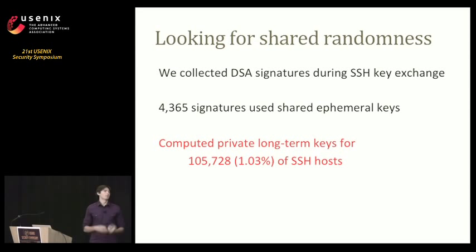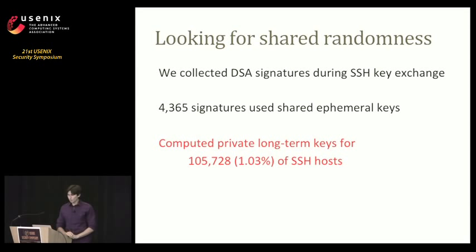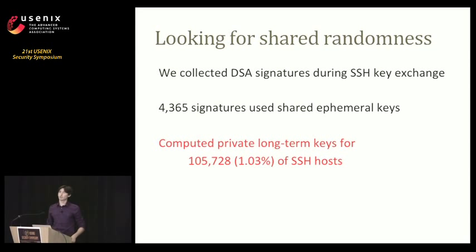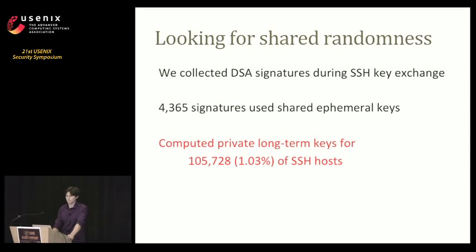When performing our SSH scan, we collected signatures along with the SSH keys and looked for signatures sharing randomness. We found approximately 4,000 signatures sharing these ephemeral keys. This wasn't a single machine using the same randomness twice — instead, machines were generating the same randomness deterministically across multiple machines. Because they all had the same private key, they were effectively compromising each other. After compromising these keys, we computed the private keys for approximately 100,000, or 1%, of SSH hosts on the internet.